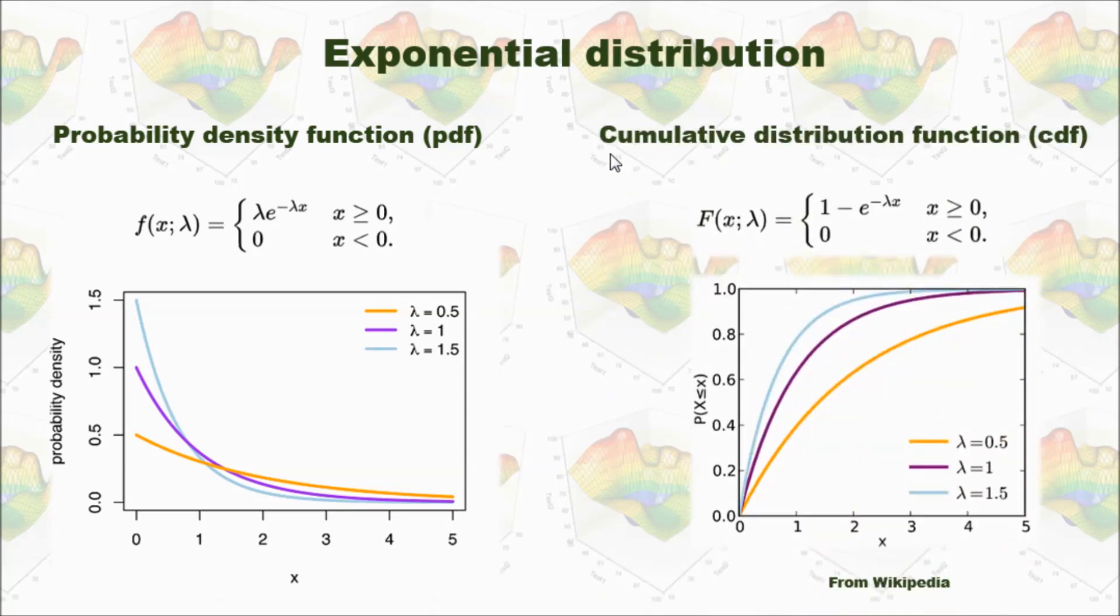If we check this cumulative distribution function, you can see if lambda is large, the cumulative distribution will increase much faster. And if lambda is small, say it's only 0.5, then the curve will increase slowly.